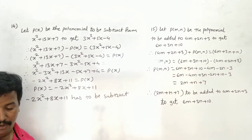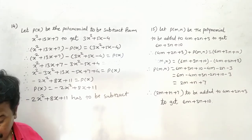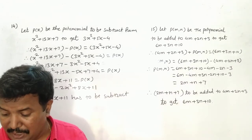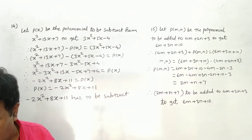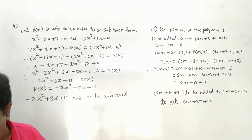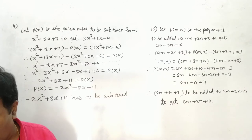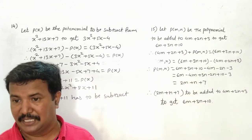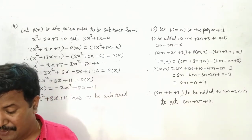Question number 15: Which polynomial is to be added to 4m² + 2m + 3 to get the polynomial 6m² + 3m + 10?